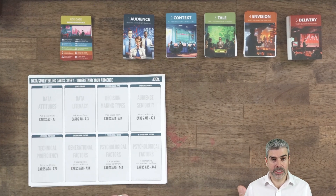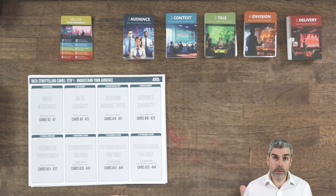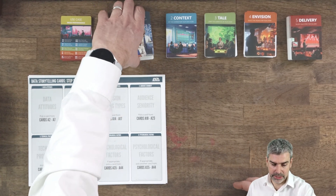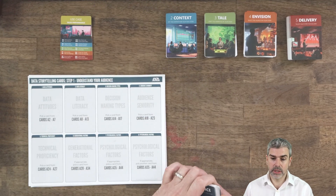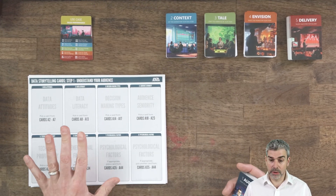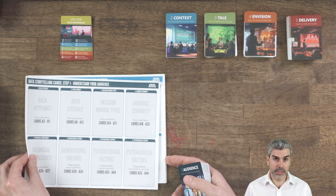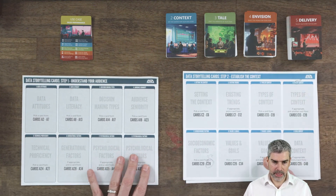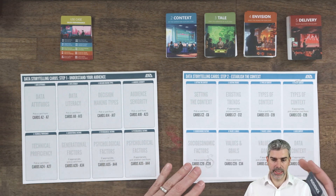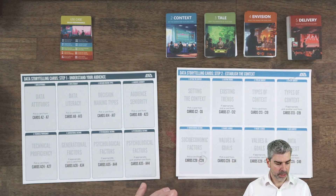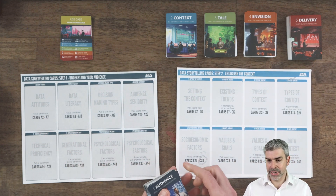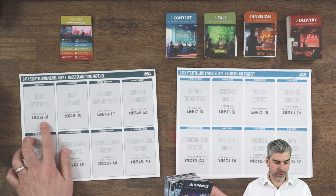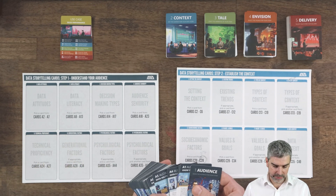We know we have the Inland site and we're going to build a dashboard, but we want to start with understanding the audience. To understand our audience, we follow the framework and the structure. A great way to do that is to use these templates. We'll start with our data attitudes — cards A2 to A7.